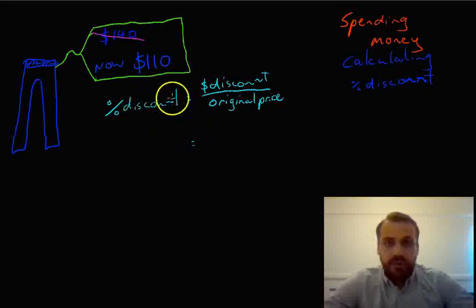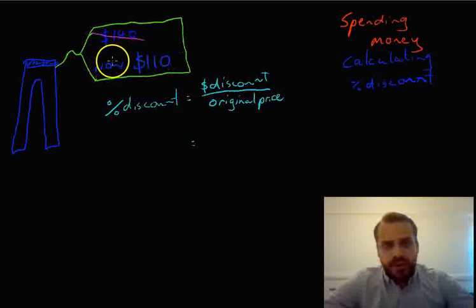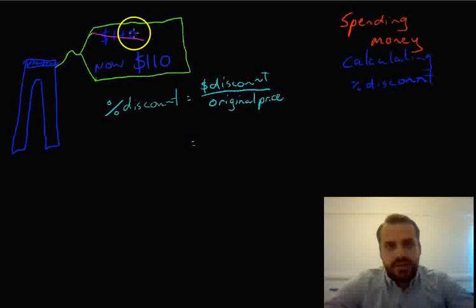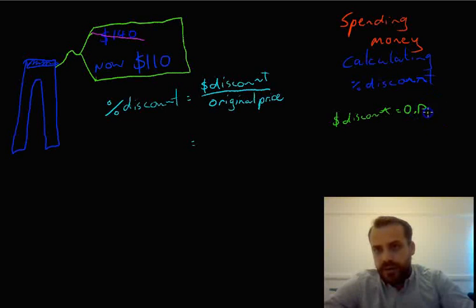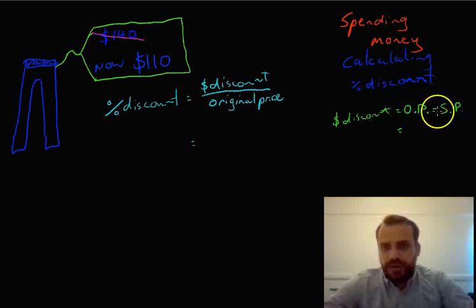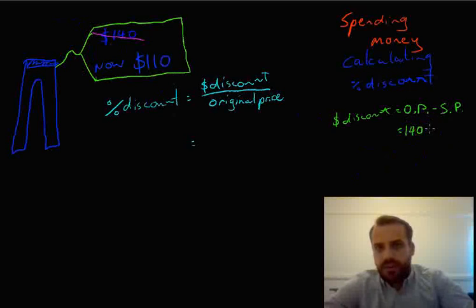So after we've got a formula, we really just need to figure out how we're going to make this happen. So the question first is, what was the dollar discount here? We can do this as a little bit of side working over here on the left. The dollar discount is equal to the original price minus the selling price. The original price of this thing was $140. The sale price is $110. Which means that the discount must be $30.